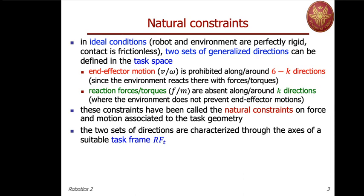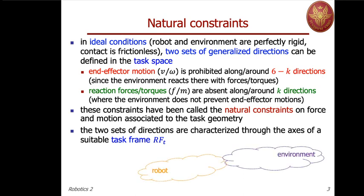These constraints that limit where we can have reaction forces or where we can move have been called natural constraints on force and motion, and they are associated to the task geometry — in particular to the way in which the end effector is interacting with the environment. How do we characterize these directions? This is done through the definition of a task frame, which we call reference frame with a subscript T in general, and the axes of this frame will specify which are these directions.